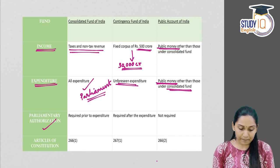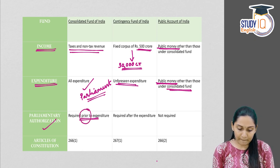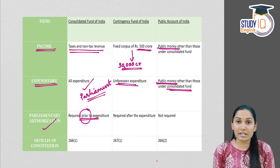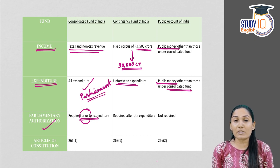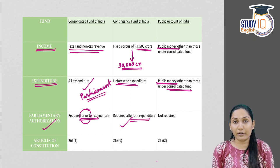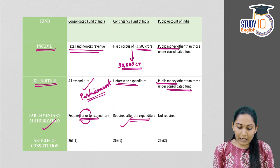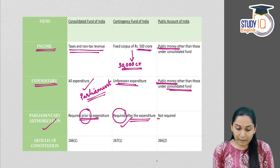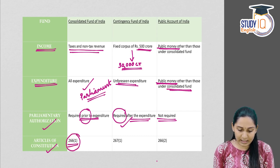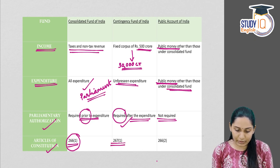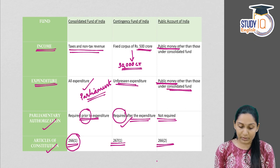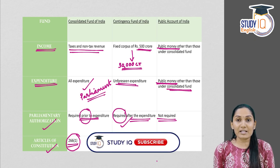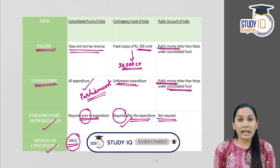Regarding parliamentary authorization: any withdrawal from the Consolidated Fund requires prior parliamentary approval. For the Contingency Fund, the President can dispose of funds without parliamentary approval during an emergency, but once Parliament comes into session, the expenditure must be approved retrospectively. For Public Accounts, there is no need for parliamentary approval. The corresponding constitutional articles are: Consolidated Fund — Article 266-1; Contingency Fund — Article 267-1; Public Accounts — Article 266-2.